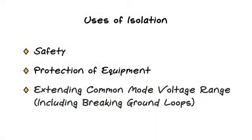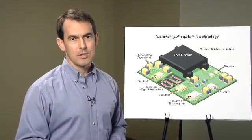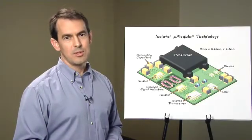The three uses of isolation are safety, protection of equipment, and extending the common mode voltage range, which may include breaking ground loops. Often overlooked are additional benefits, which improve communication performance.